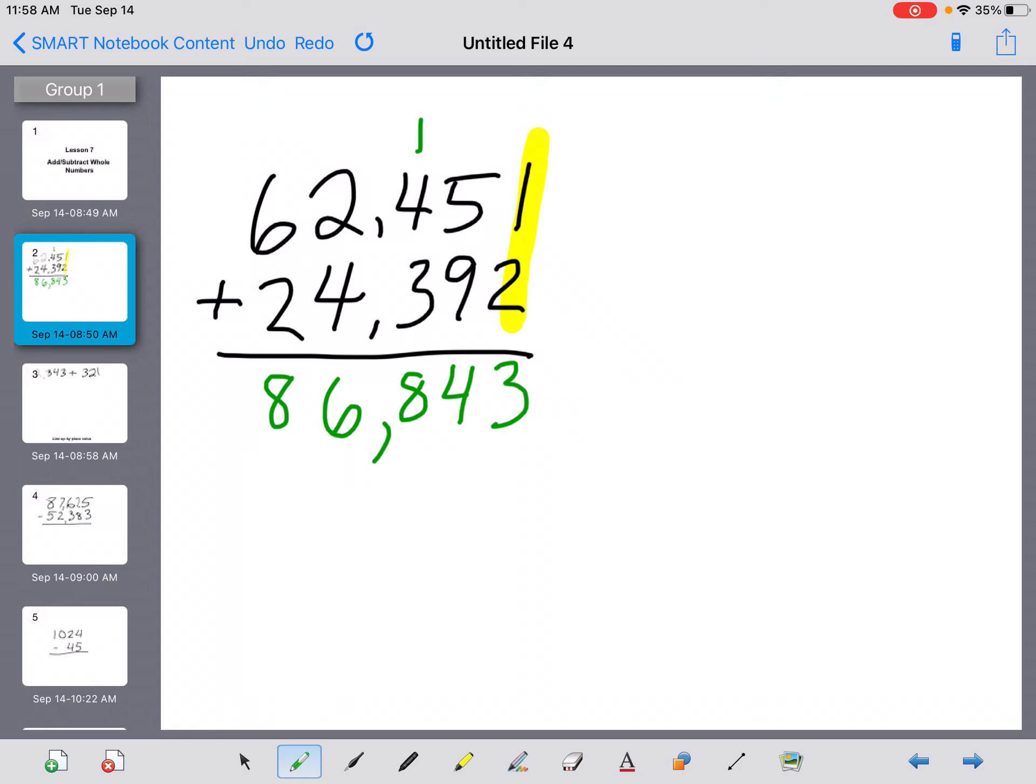Now, I just want to point out here that this is a great time to use those rounding skills that we worked on a couple of days ago to check to see if your answer makes sense logically. So what you can actually do, I'll just draw a line over here, is use rounding to estimate what your answer could be. Now, the easiest way is to just round to the greatest place value. So in this case, the 10,000s place. So 62,451 would just round to 60,000. And 24,392 would just round to 20,000. So if you think just in your head, 60,000 plus 20,000 gets me 80,000.